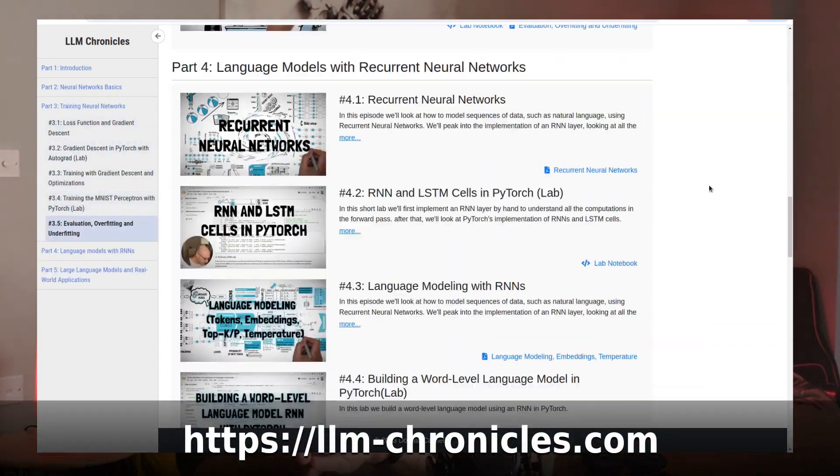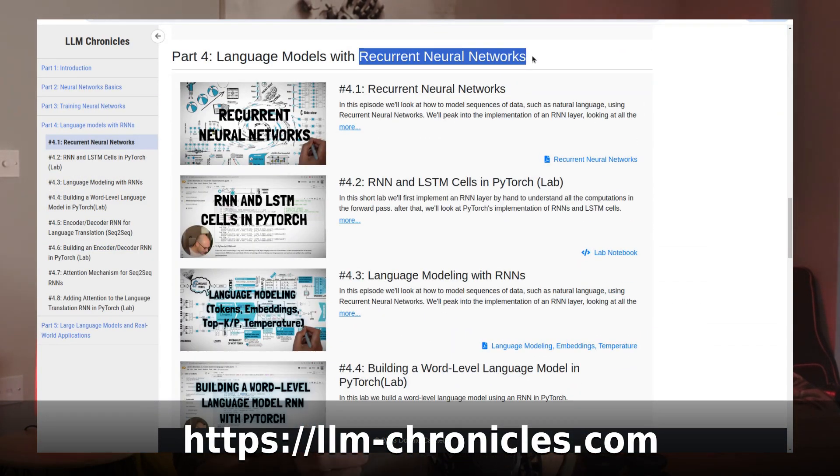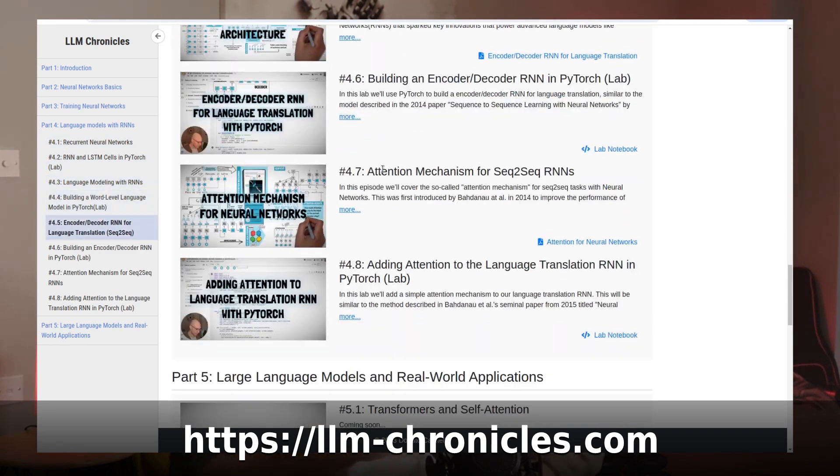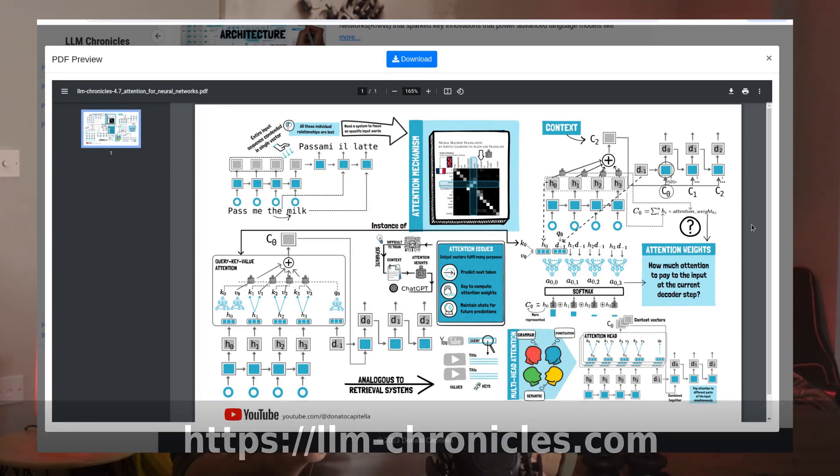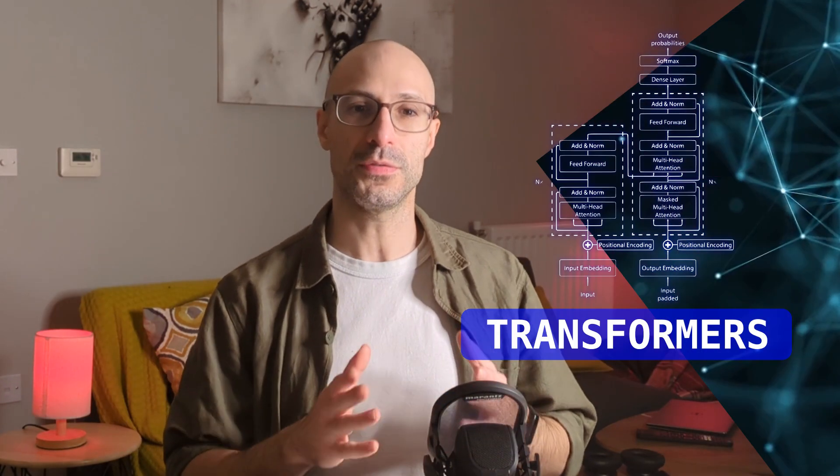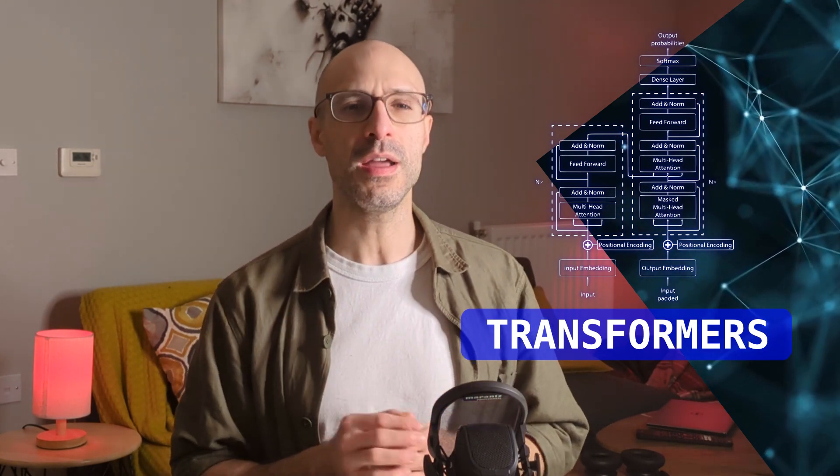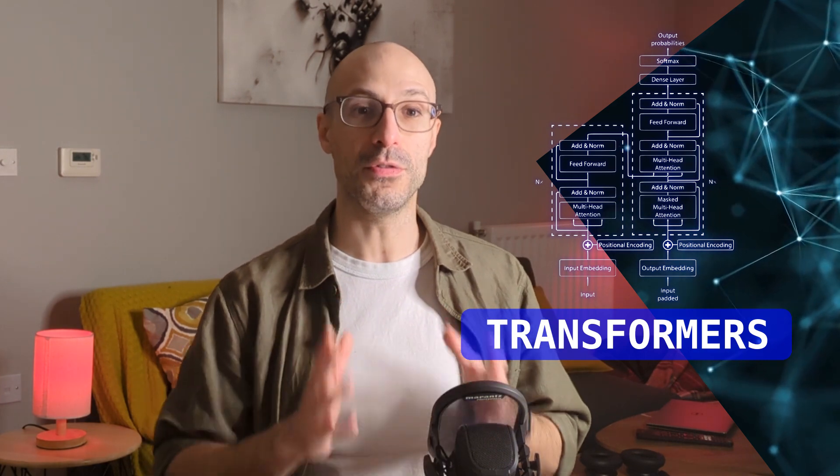In our previous episodes, we explored the seminal work on sequence-to-sequence modeling with recurrent neural networks. Specifically, we saw how the attention mechanism improved the encoder-decoder architecture for language translation. In this episode, we'll look at the groundbreaking transformer architecture, which builds on top of everything we've seen so far to deliver incredible performances.